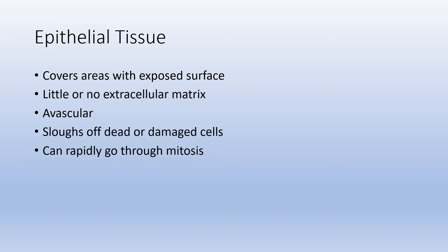Epithelial tissue is avascular, so it is dependent upon underlying tissue to supply blood and nutrients, which provides oxygen and nutrients for survival. The epithelial tissue tends to be relatively thin or on the surface, farthest away from the underlying connective tissue. Farther from those blood vessels, the cells start dying. Epithelial tissue on the exposed surface tends to slough off dead or damaged cells, but it can go through mitosis rather quickly — reproducing cells whether they are damaged, injured, or die off — and it can repair that rather quickly.